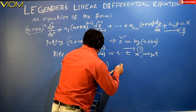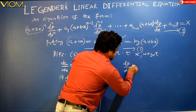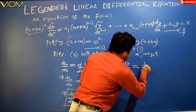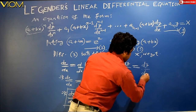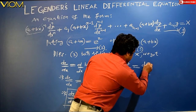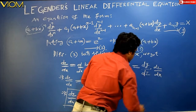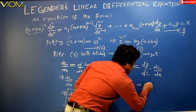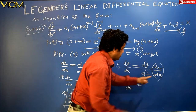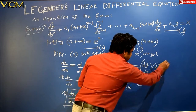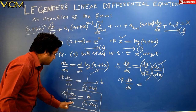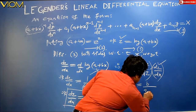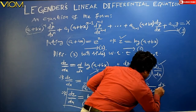Using the chain rule, dy/dx = (dy/dz) · (dz/dx). We know dz/dx = b / (a + bx), so substituting this value, dy/dx = (dy/dz) · b / (a + bx).